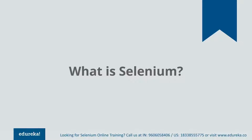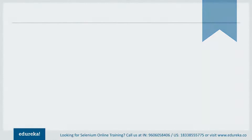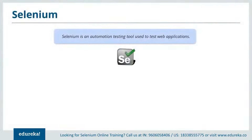Automation testing is more preferred over manual testing because it reduces the errors that occur during the simulation of the process. Selenium is an automation tool that is used to test web applications. You might think it is just a testing tool — why is it of such great importance? Why not the other tools that help in testing?